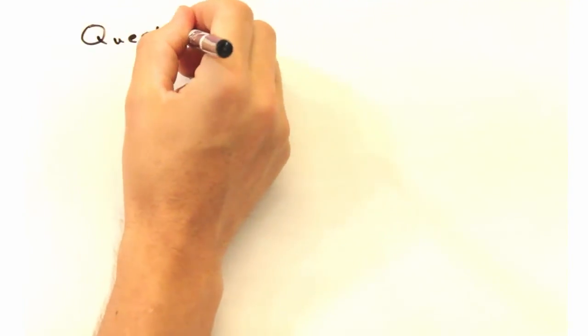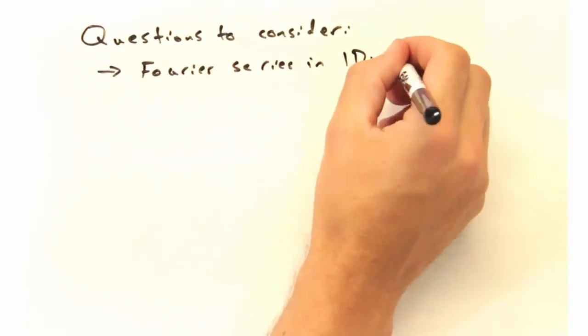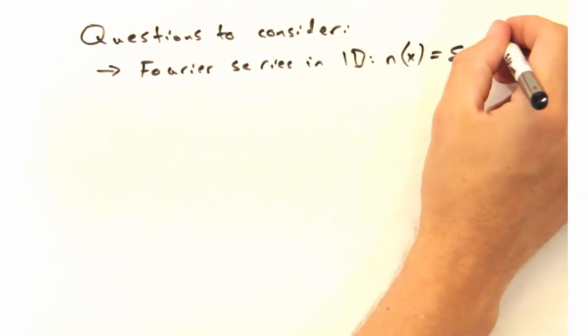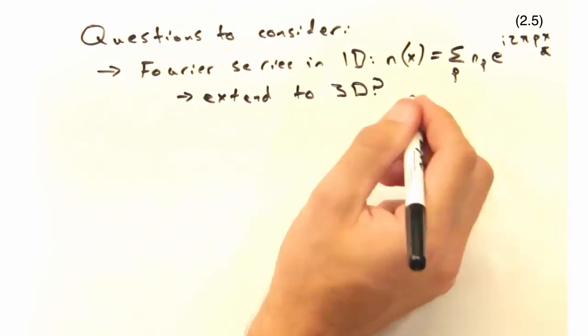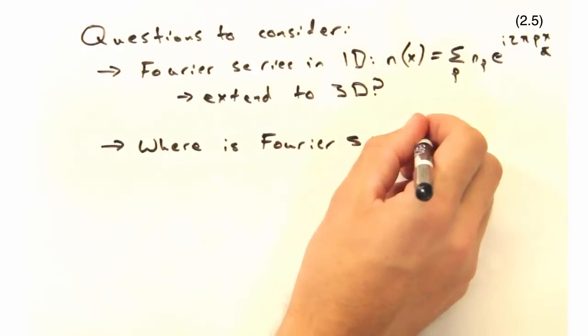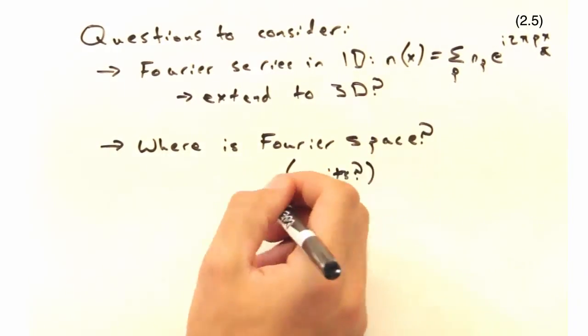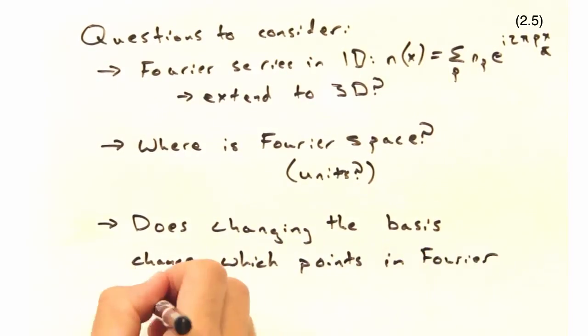As always, here are some questions to consider at home. First, we gave you what the Fourier series looks like in 1D. How would you extend equation 3.5 to a crystal with three dimensions? Second, where is this Fourier space? It might help to think about units in this case. Third, does changing the basis change which terms in the Fourier series are allowed?